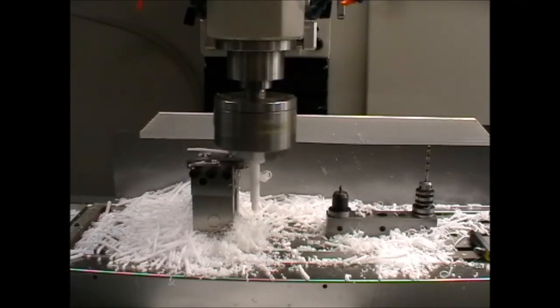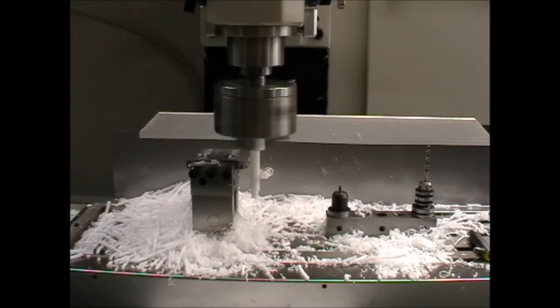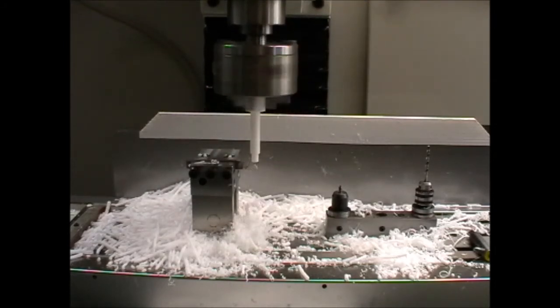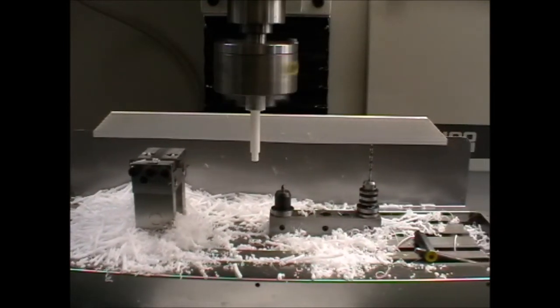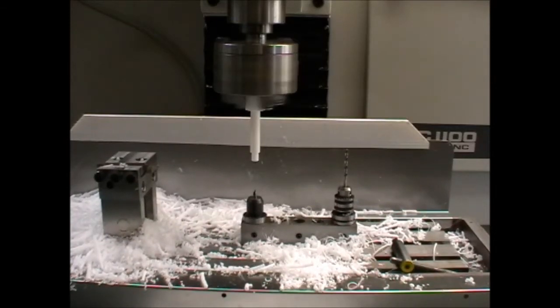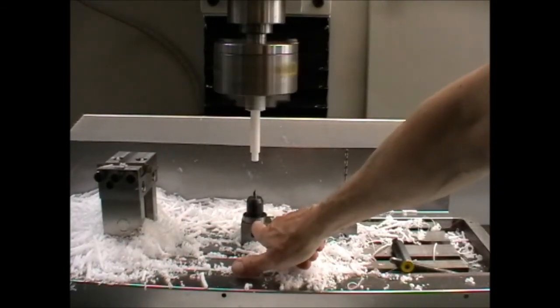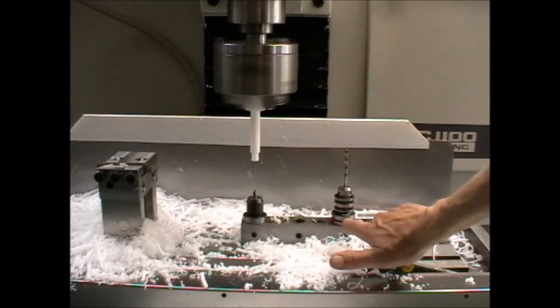Now that was all done on G54. The code then changes to G55. The G55 is the centre line of that board. G56 that one. G57 that one.